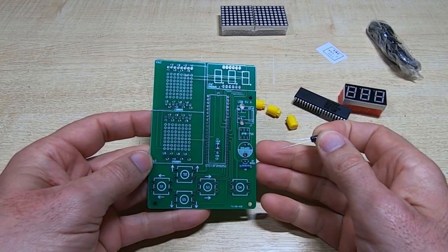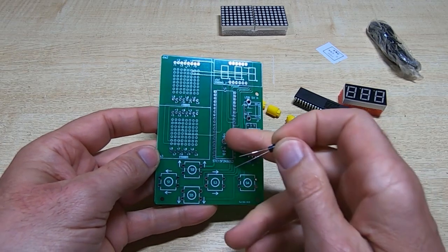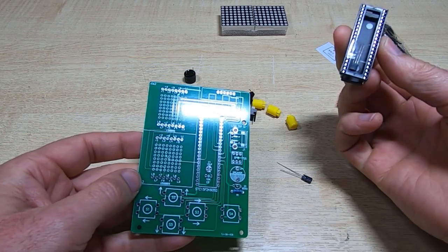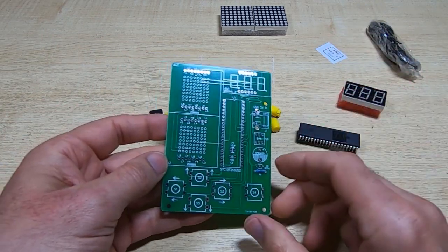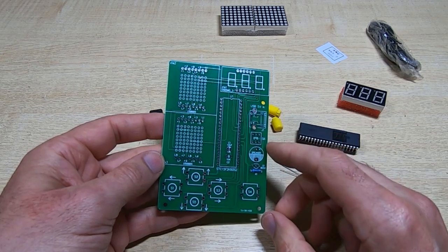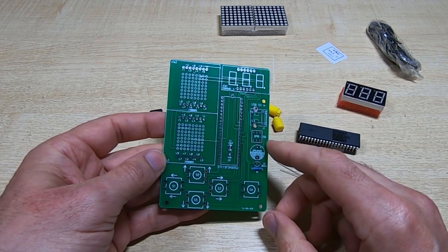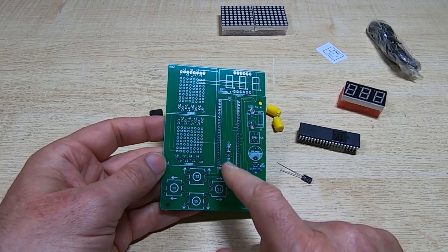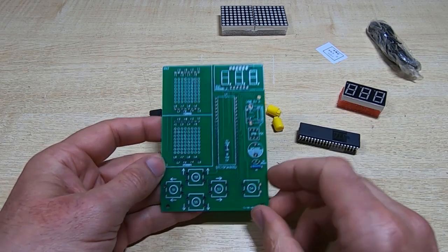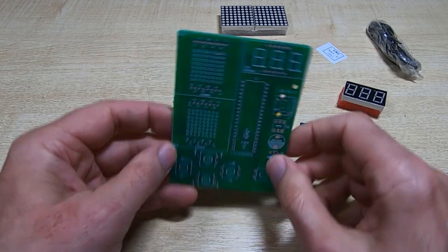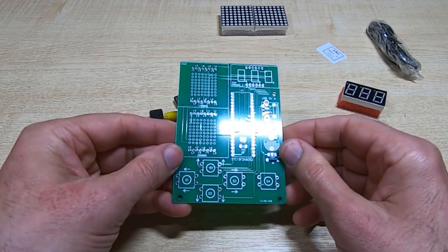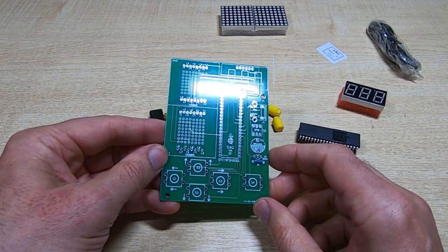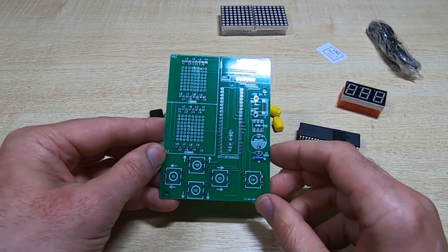We'll now fit the two capacitors. So it looks like we have one to go here and one to go here. They are underneath the IC. I can't see any other locations for them, so presumably we have to lie down this one. So what I'm going to do is actually going to fit the socket first, and then we'll see what space we've got for the two capacitors.